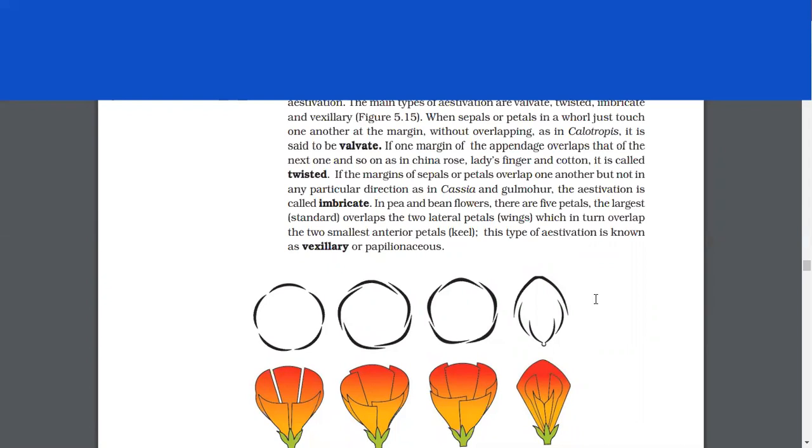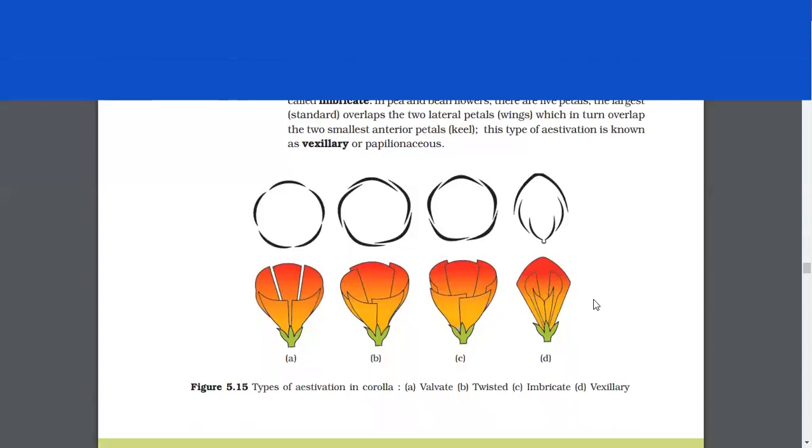If the margins of the sepals and petals overlap one another, but not in any particular direction, as in cassia and gulmohar, the aestivation is said imbricate. In pea and bean plants, there are five petals. The largest overlaps the lateral two petals, which in turn overlap the two smallest anterior petals. This type of aestivation is known as vexillary or papilionaceous.